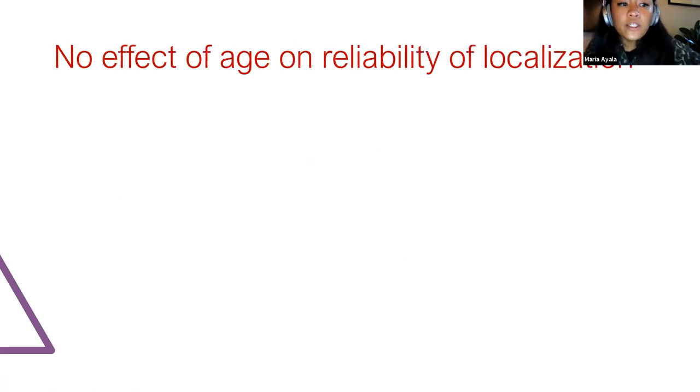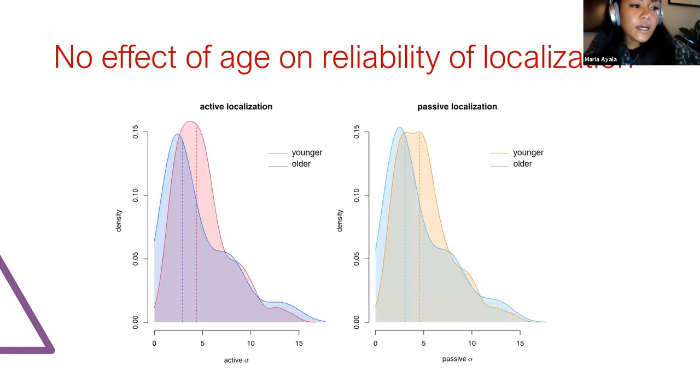Our second question is whether older adults display greater proprioceptive variability than younger adults. Here you'll see the probability density function for the active localization condition and the passive localization conditions, and in the warmer hues you'll see the younger participants and the older participants in the cooler hues.